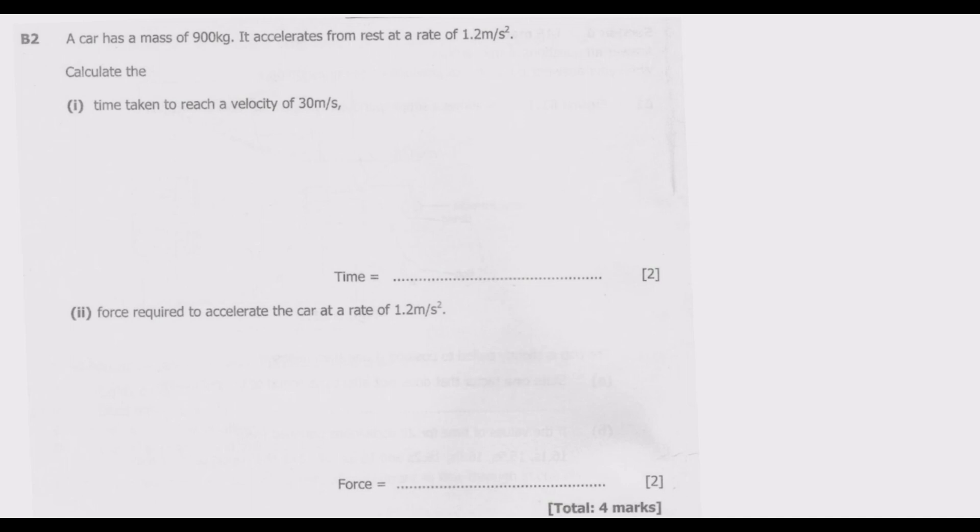We know that final velocity equals initial velocity plus acceleration times time. So we know the acceleration is 1.2, which you've been given. Then we know the final velocity, and the question is asking us to find the time.